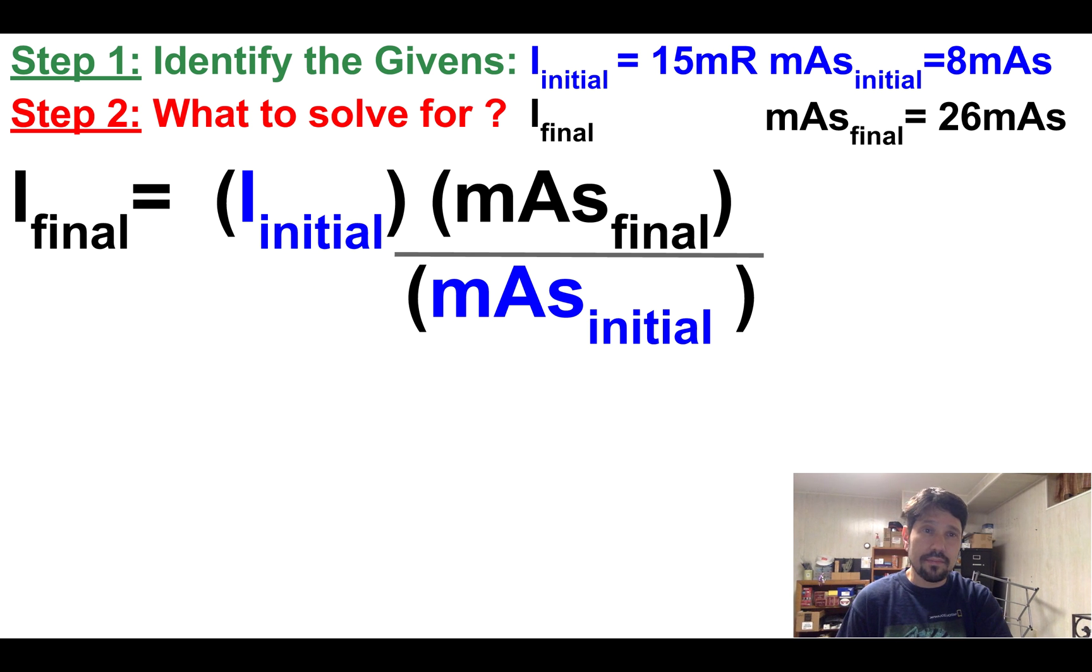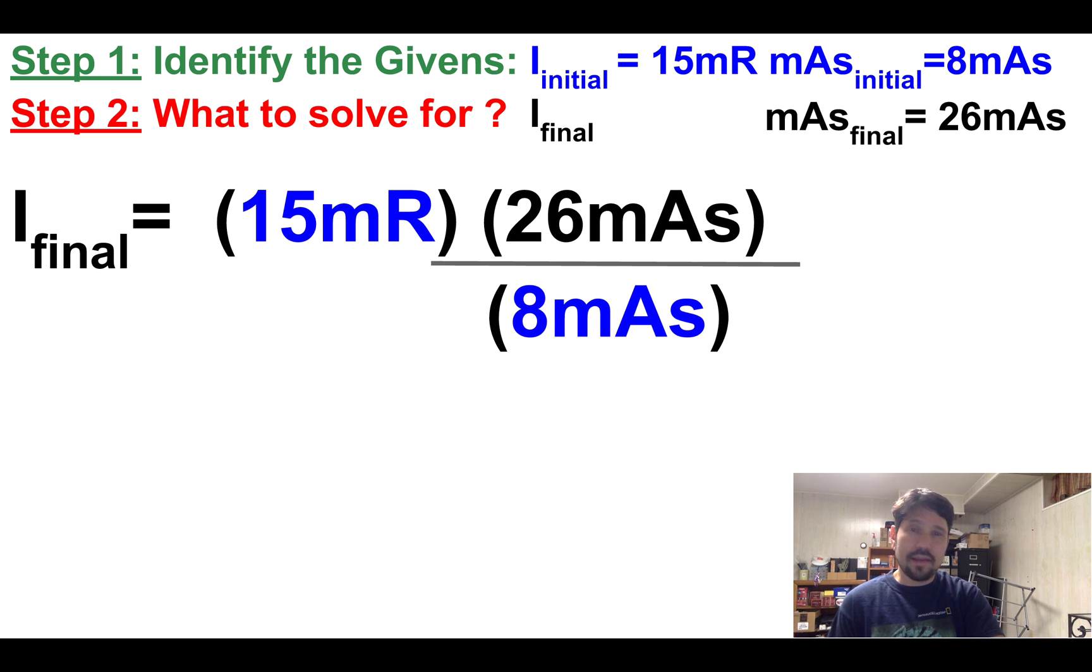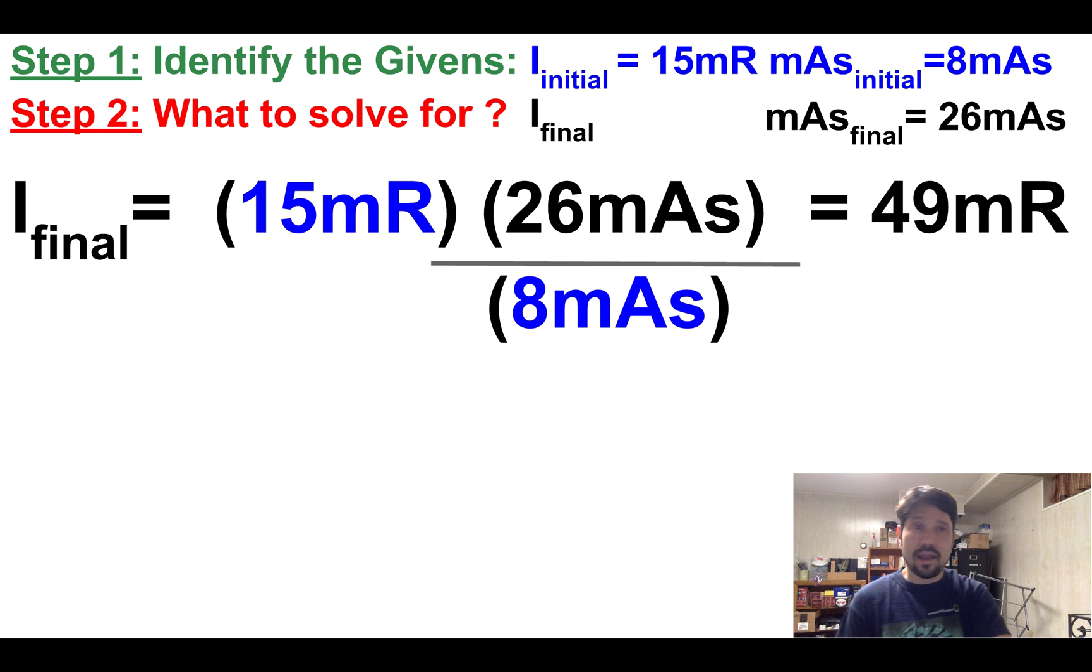So here's my equation, initial times the ratio of masses. And I go ahead and I put in 15 mR initial times the new mAs divided by the old mAs. And that's how I would get 49 mR.